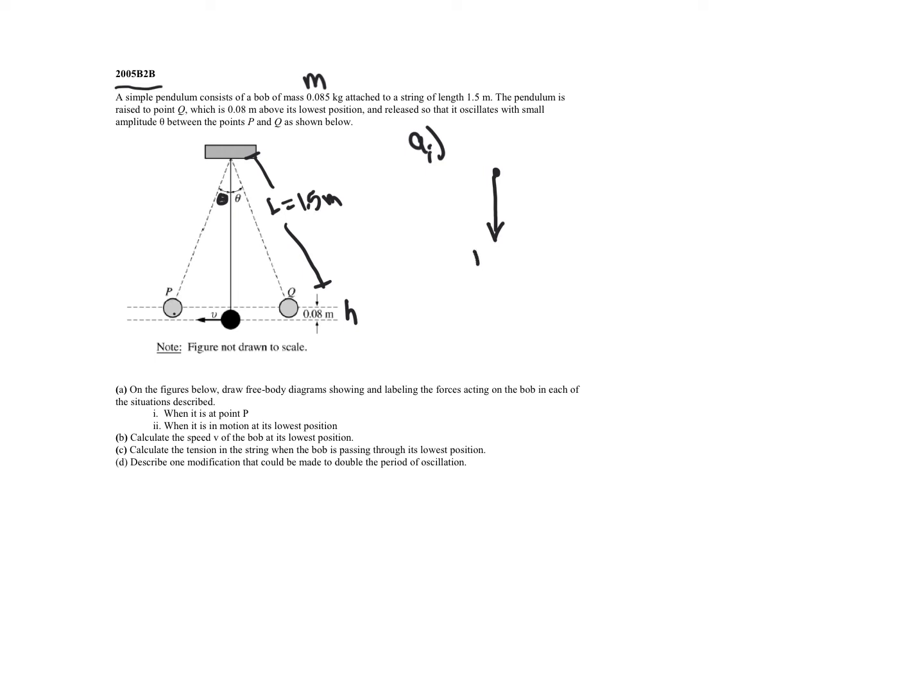We see the bob does have a mass times gravity, and it does have a tension that's pulling up in that direction. So those are really the only two forces we have acting on it: the object's weight and the object's tension pulling up. So I think this would be an acceptable answer for A part 1.